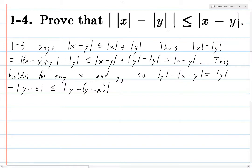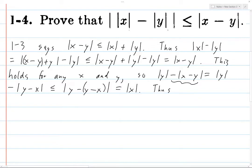Now what do we do with this? This is y minus y minus x — this is just the norm of x. So we have this part, and this thing is less than or equal to this thing.